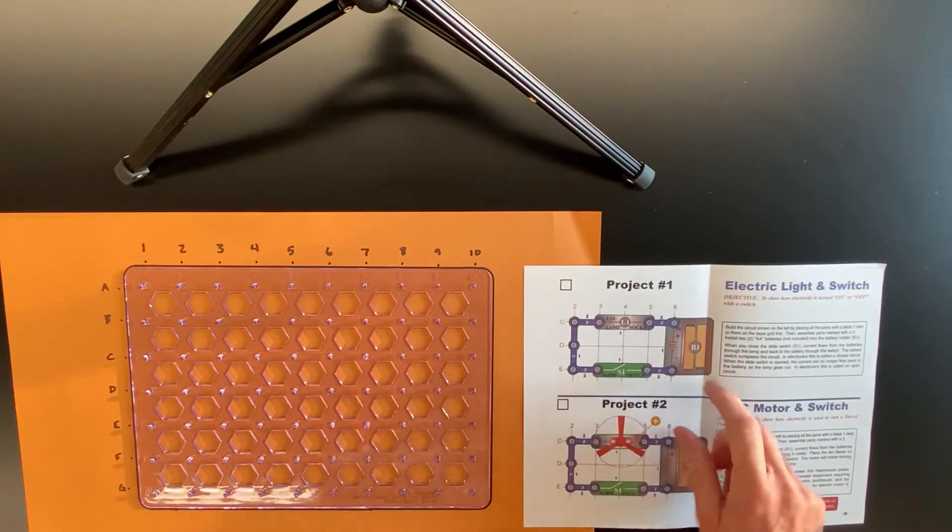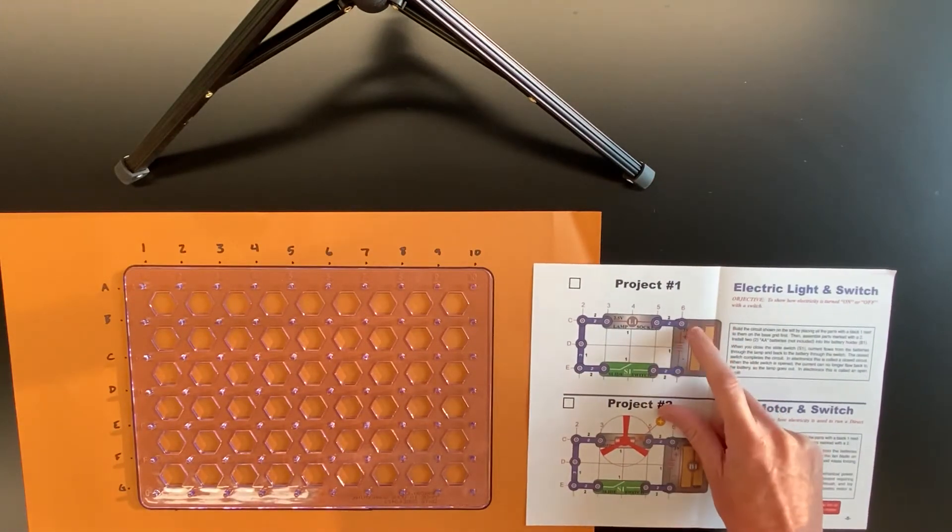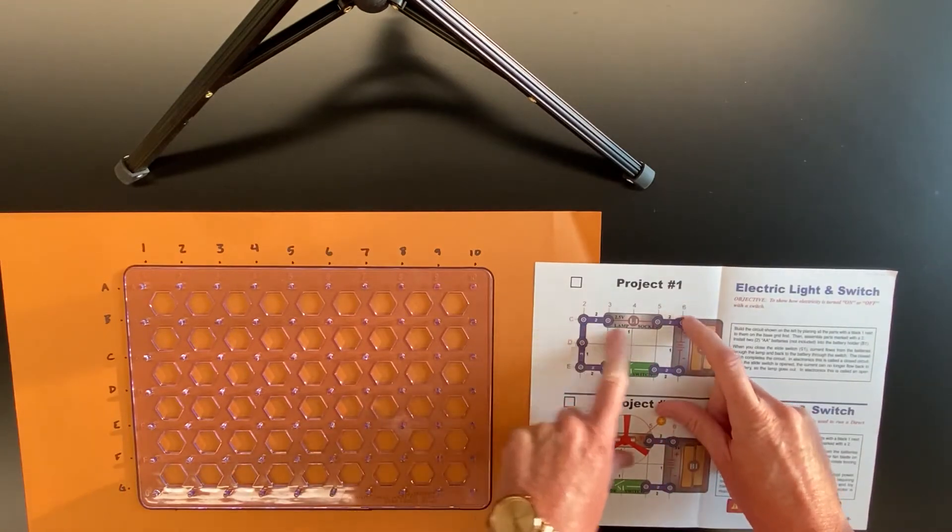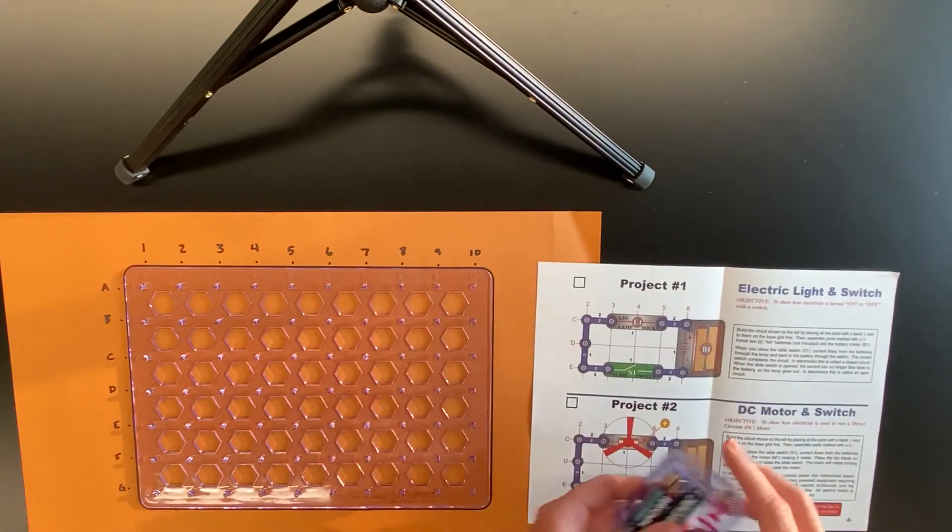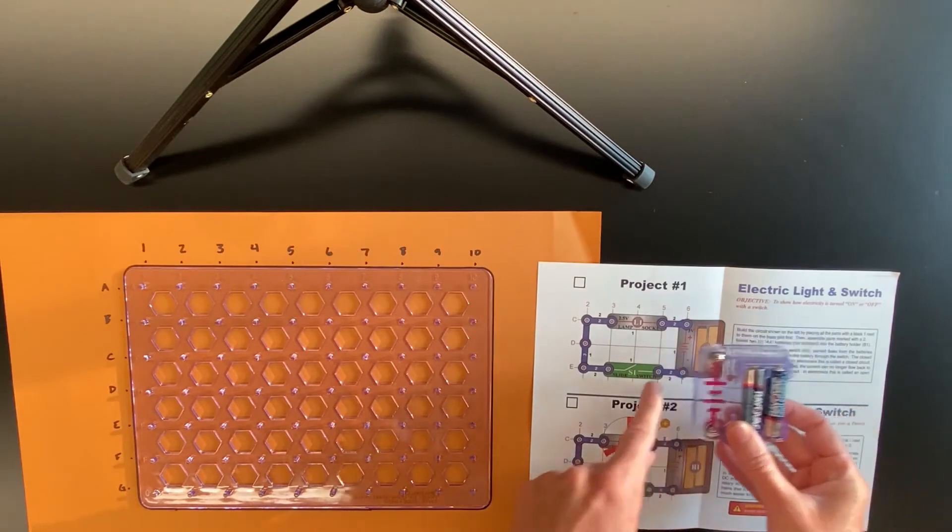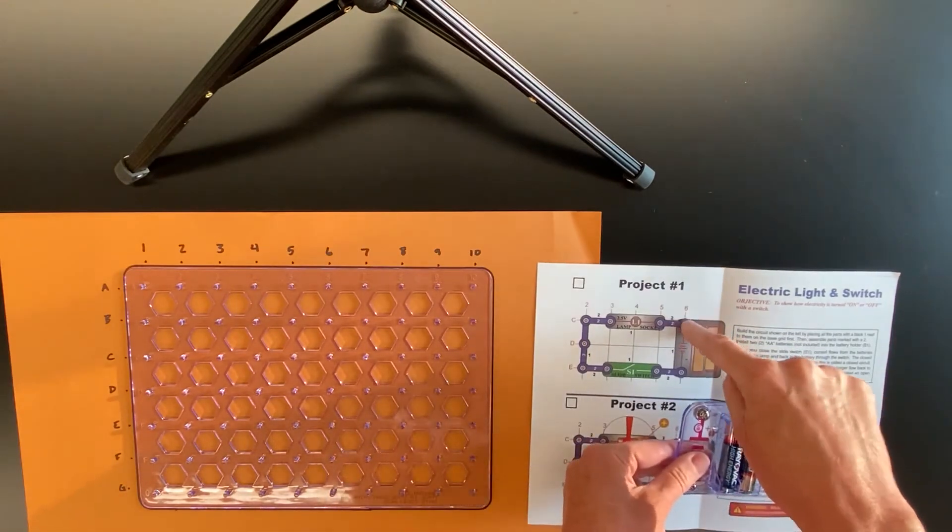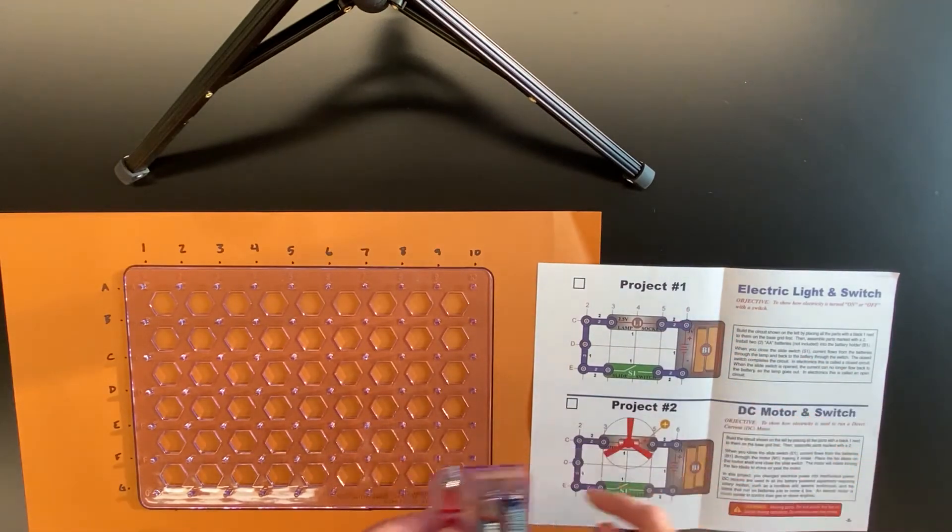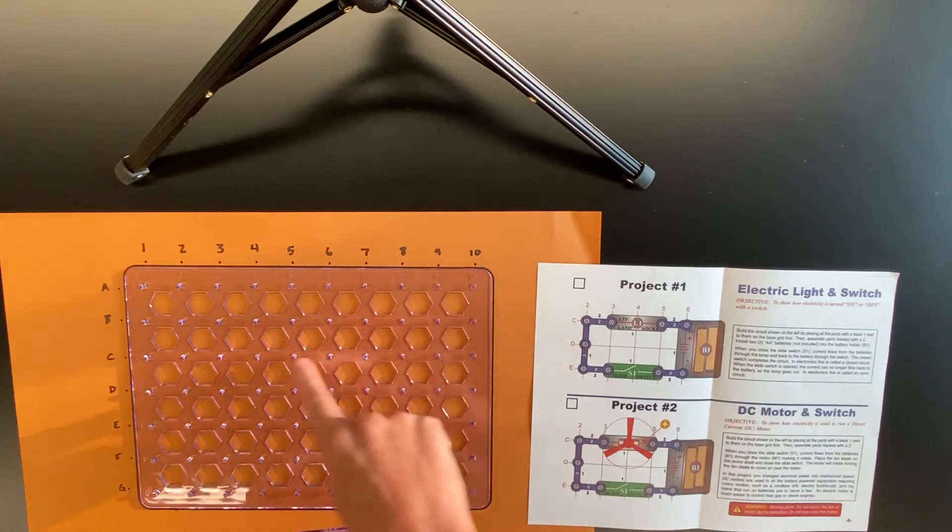Looking at project number one, I notice the battery pack is at the corners of C6. I'm going to match up my battery pack in the same direction, finding where this corner matches at column 6, row C.